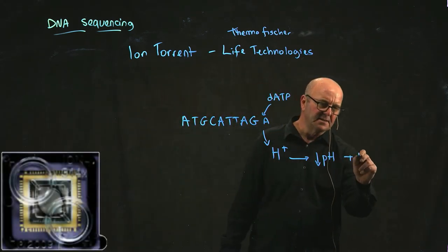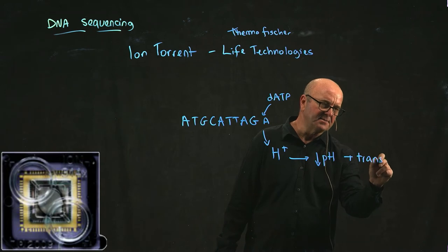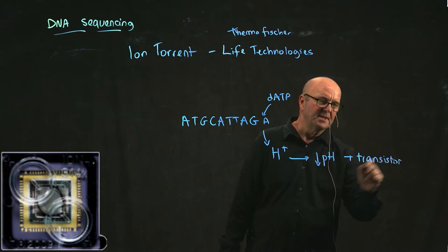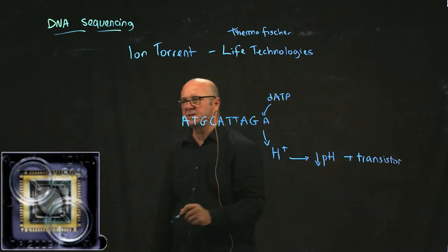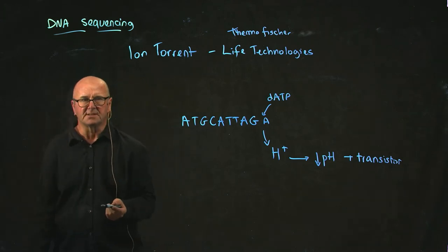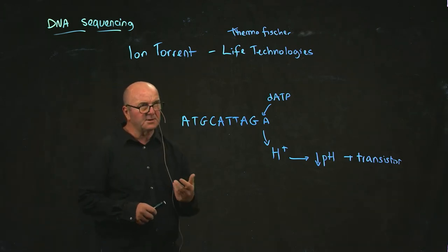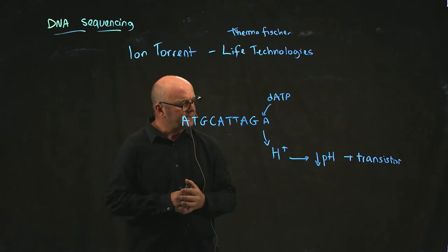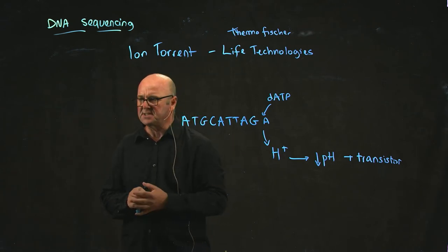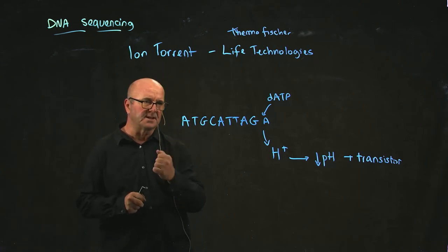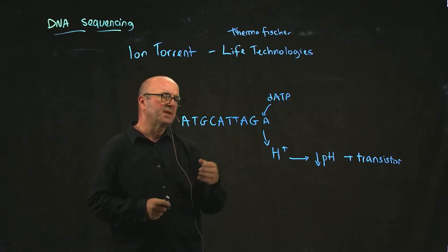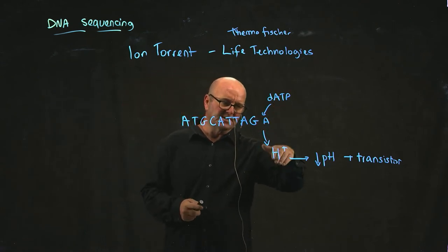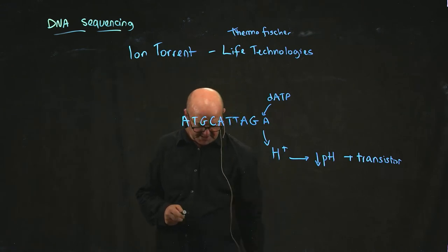If you do that with a regular transistor, you can actually detect that change in pH with the transistor. And so Ion Torrent developed a detection system based off of transistors, where you could add the DNA into small wells, you could add the nucleotides, and it would detect the hydrogen ions coming off.